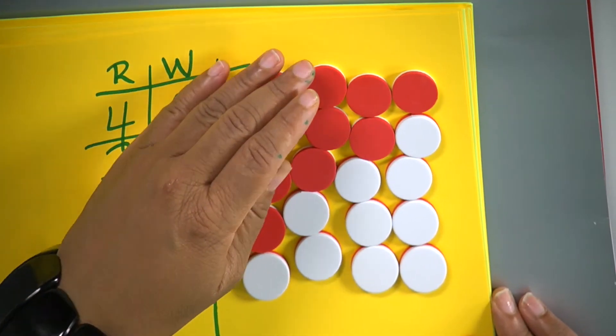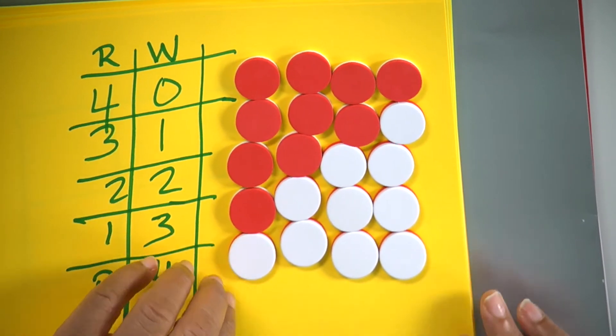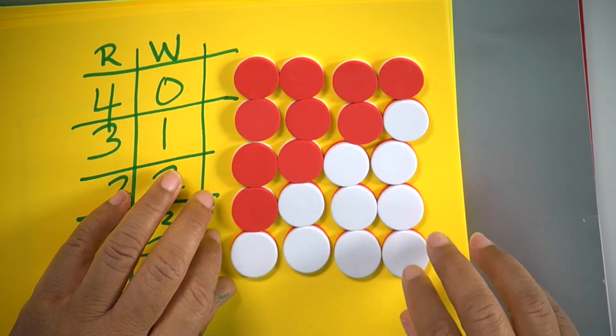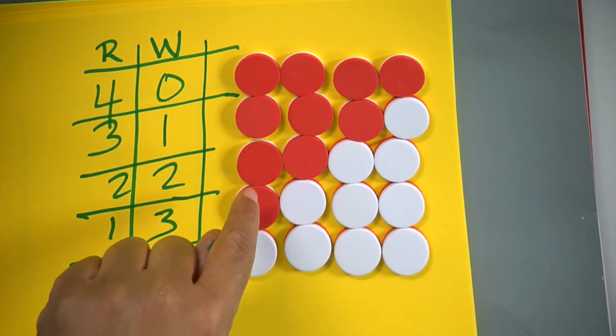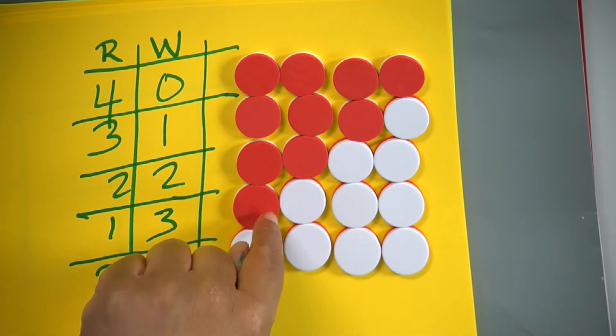So we've looked at a part, part, whole problem where you know both of the parts, a part, part, whole problem where you know one of the parts, and a part, part, whole problem where you don't know either one of the parts — both add-ins are unknown. I've set this up so you can see what this looks like. You might say to the kids: in the tree there are some birds — there are four birds and some are red and some are white. There doesn't have to be one of each kind; it can be all red, all white, or different combinations. So the kids set it up and say: oh, there could be four red, or three red and one white.